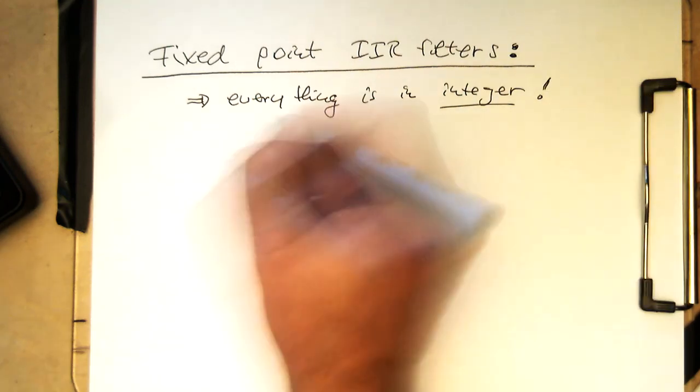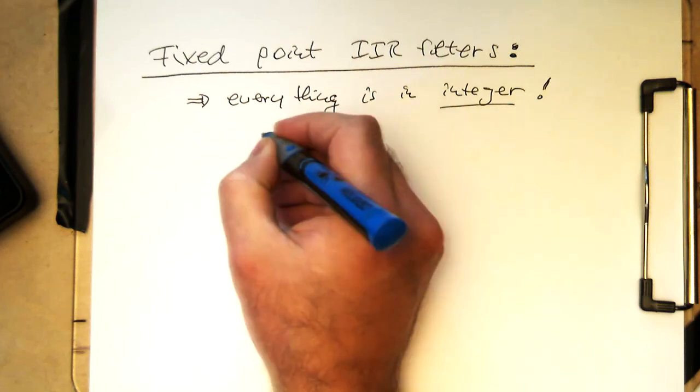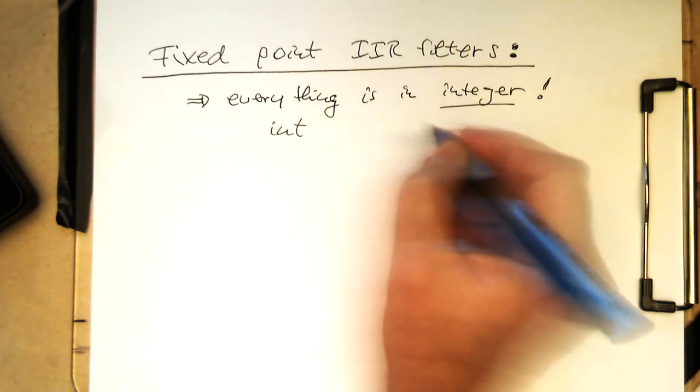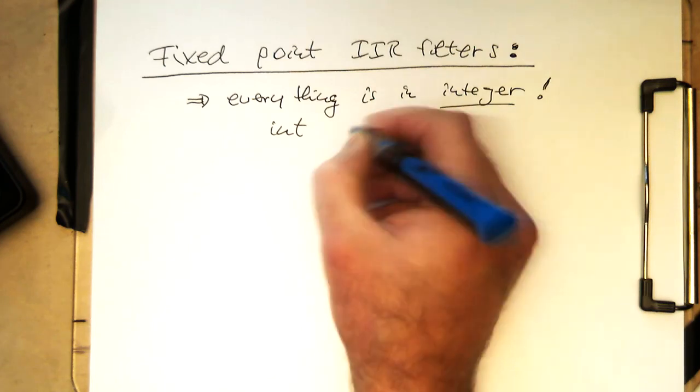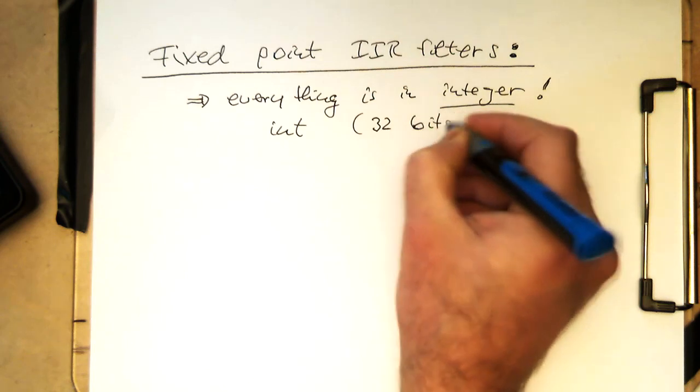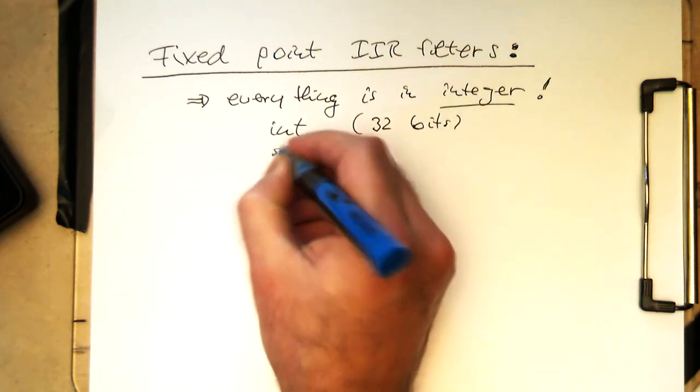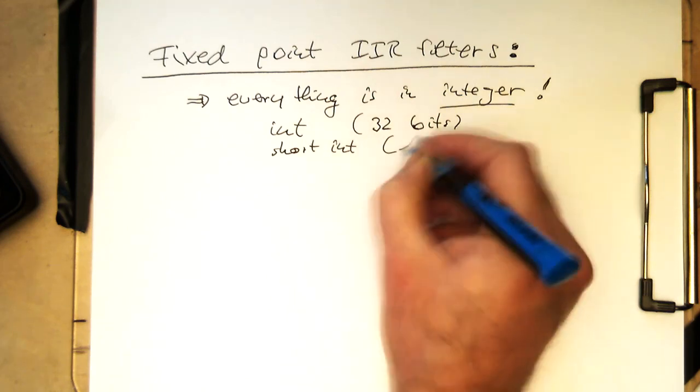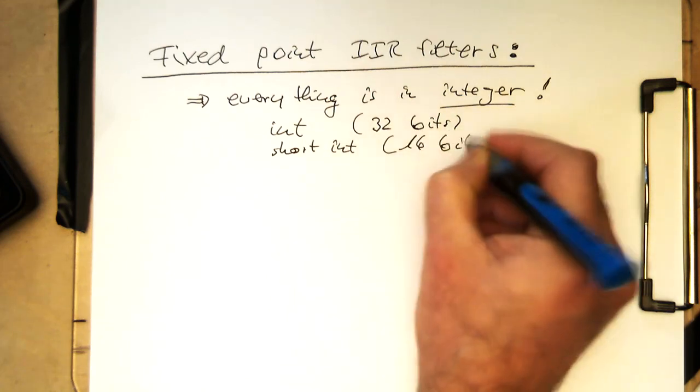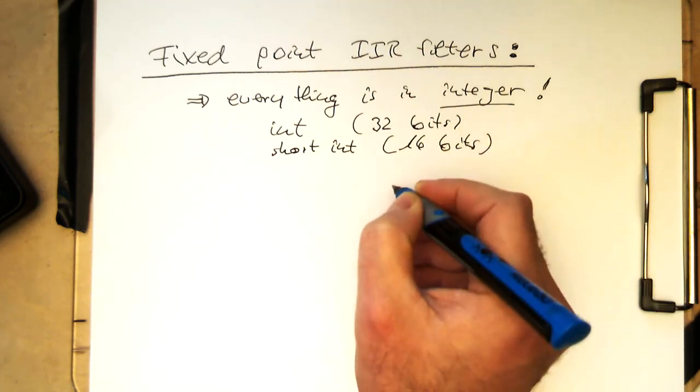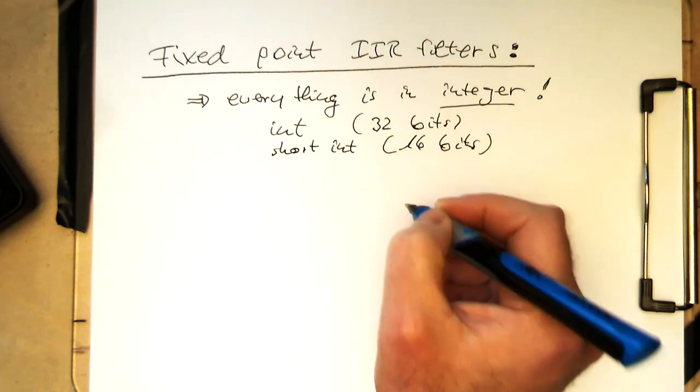Remember the classic standard integer resolutions are the normal int in C++ or C, that's usually 32 bits. And then we've got also the short int, that's usually 16 bits. These are usually the integer representations that we have.